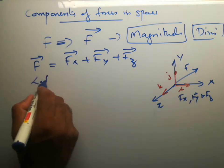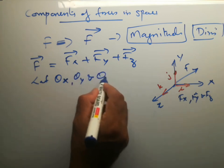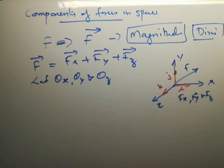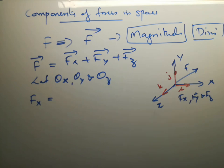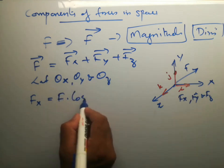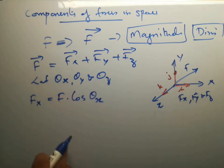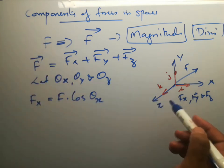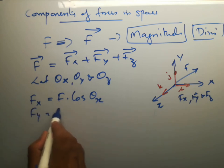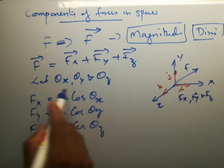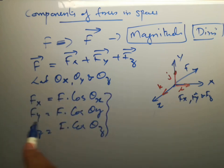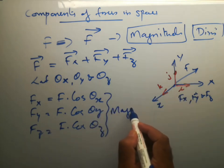Let θx, θy, and θz be the angles made with the x, y, and z axes respectively. Then the component along x — that is, fx — can be written as fx = F·cos(θx), the angle made by force F with the x-axis. Similarly, fy = F·cos(θy) and fz = F·cos(θz). These are the magnitudes of the components of force F along the x, y, and z directions.